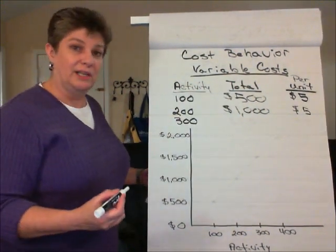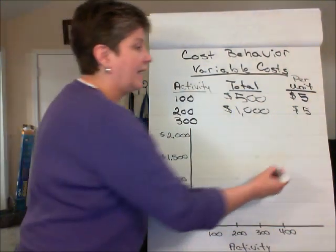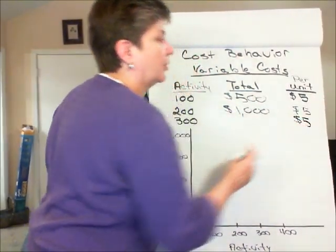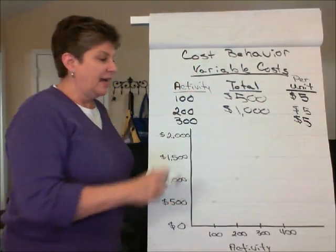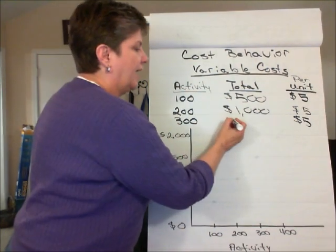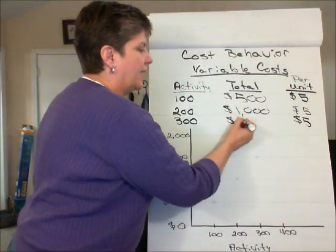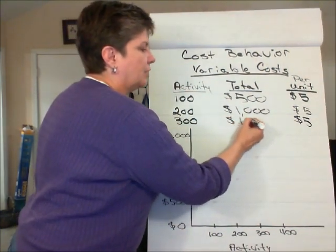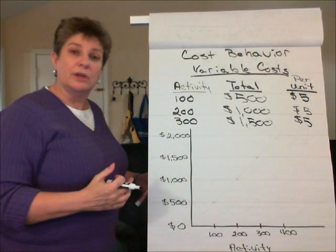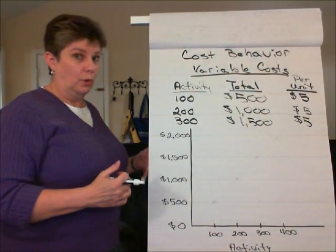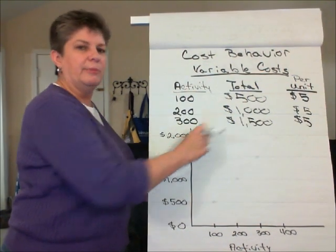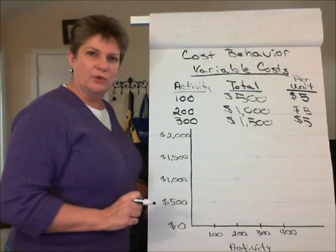By that same token, we can estimate what the total cost will be at three hundred units. As long as we're still in the relevant range, we can take that five dollars per unit and multiply it times three hundred units. Our estimated total variable cost — whether this be materials or whatever that variable cost may be — is going to be fifteen hundred dollars.